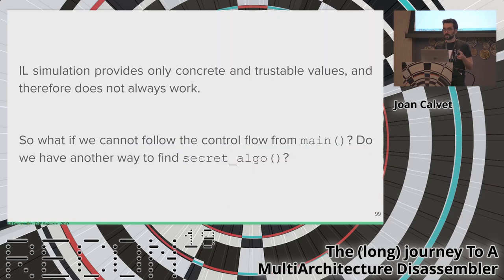Coming back to the MIPS example: after IL simulation, we report concrete values found during the simulation to the disassembler and print them as comments in the UI. Comments starting with 'pre' contain register values before the corresponding instruction; 'post' comments contain values after. The value of T9 after a particular instruction is the target of our indirect branch, so this next routine will now be disassembled by the recursive disassembler.